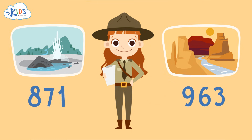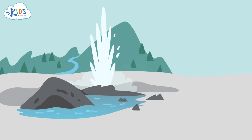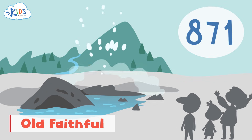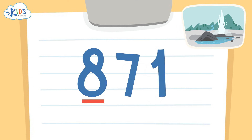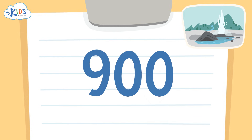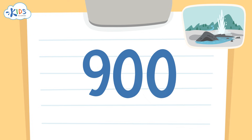Okay, here's the answer. Old Faithful saw 871 visitors, so we'll use the strategy of underlining the hundreds place and drawing an arrow to the tens place so we know what numbers we have to look at. I see a seven in the tens place. I know if it's five or higher, we have to round up. The eight in the hundreds place is underlined, so we have to round up the 800 to 900. When rounding to the hundreds place, the numbers in the tens and ones places become zeros.